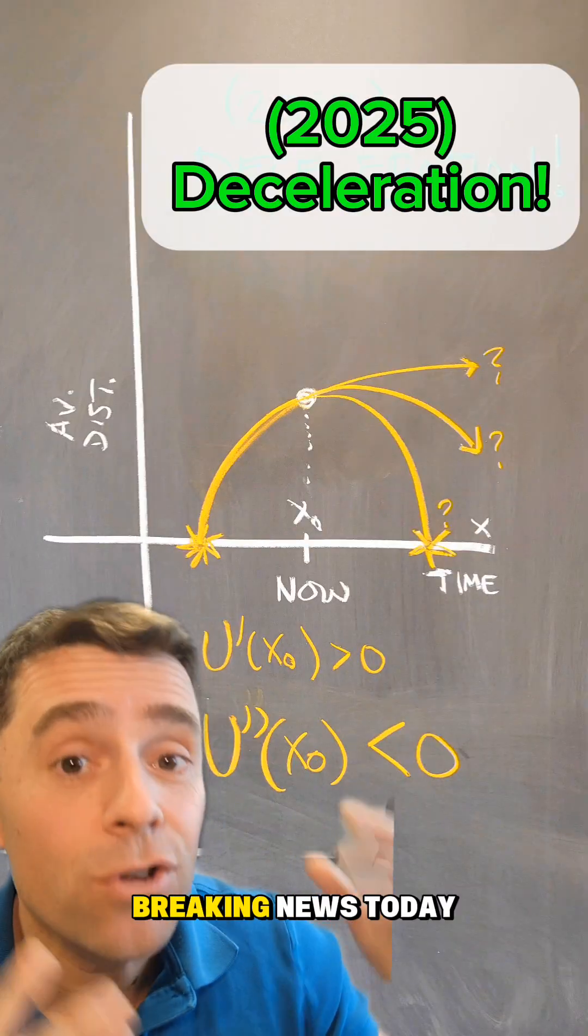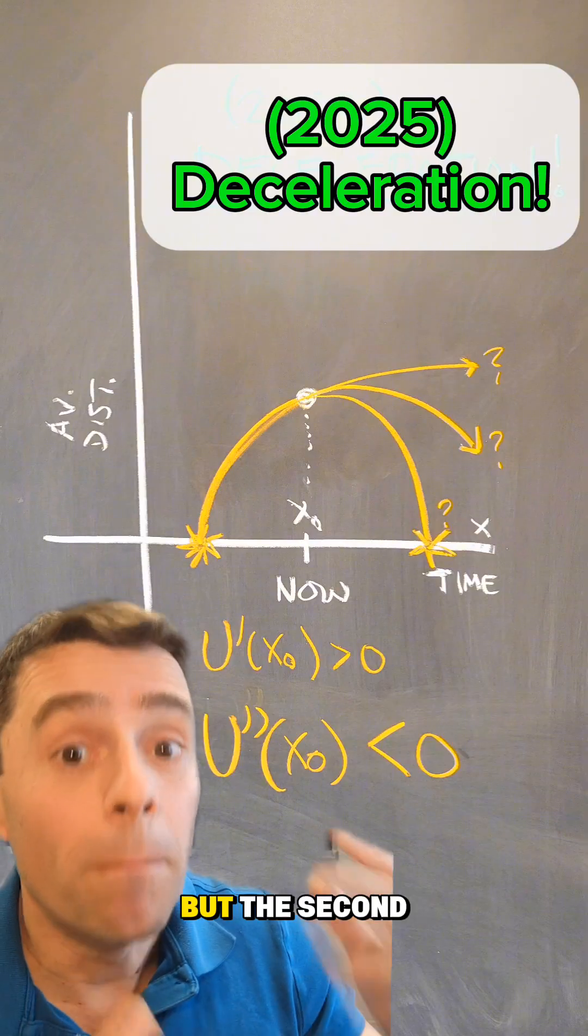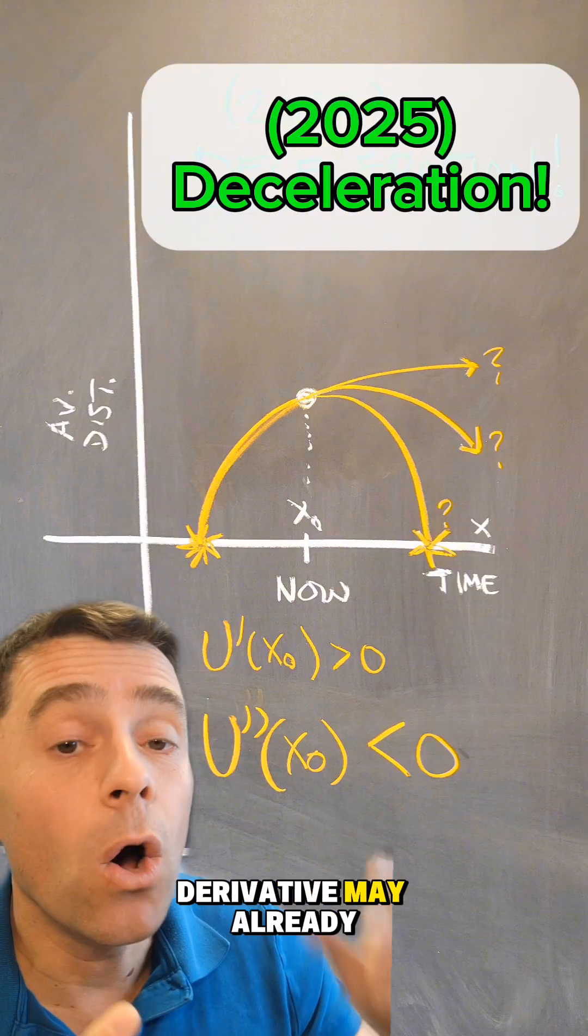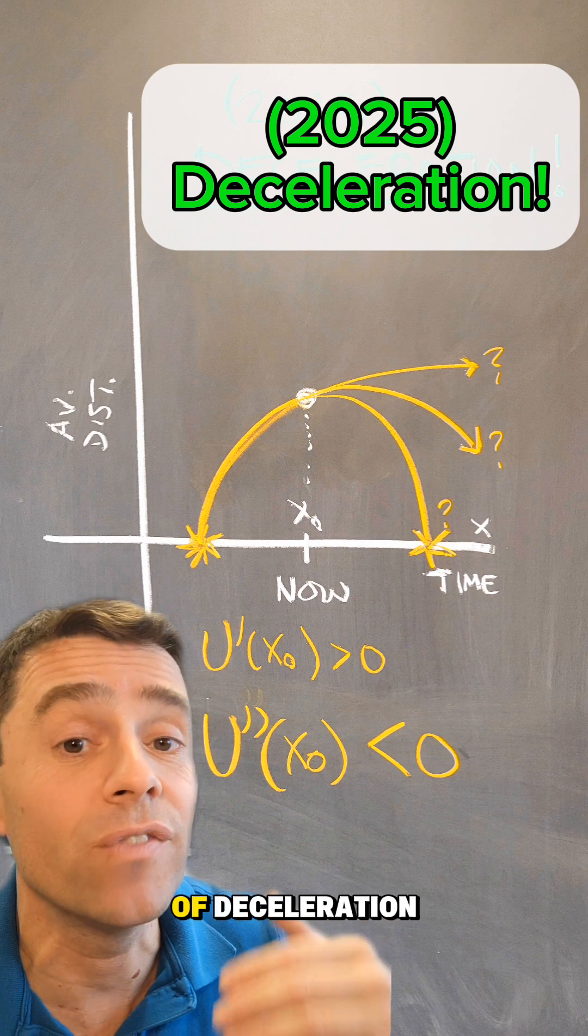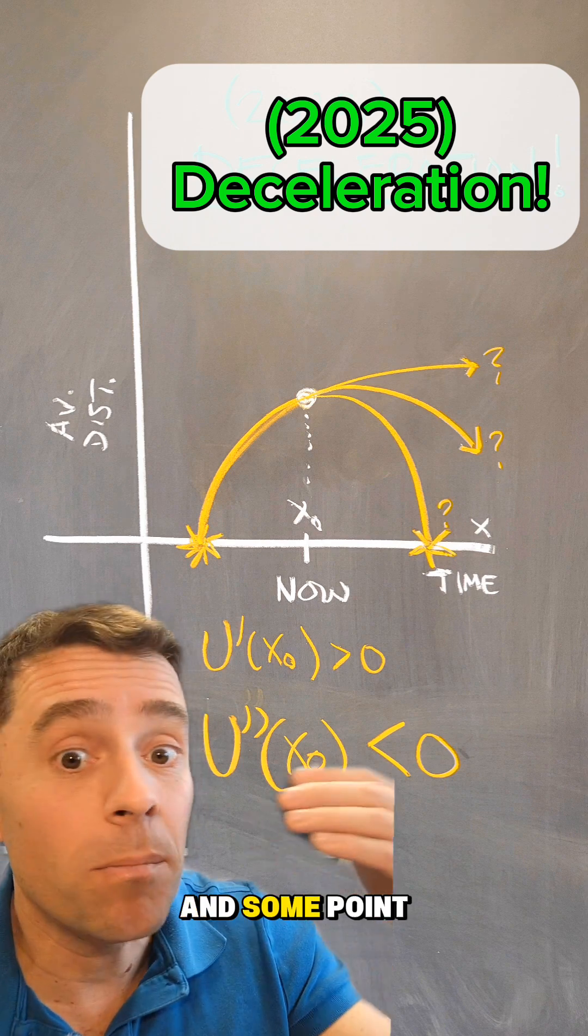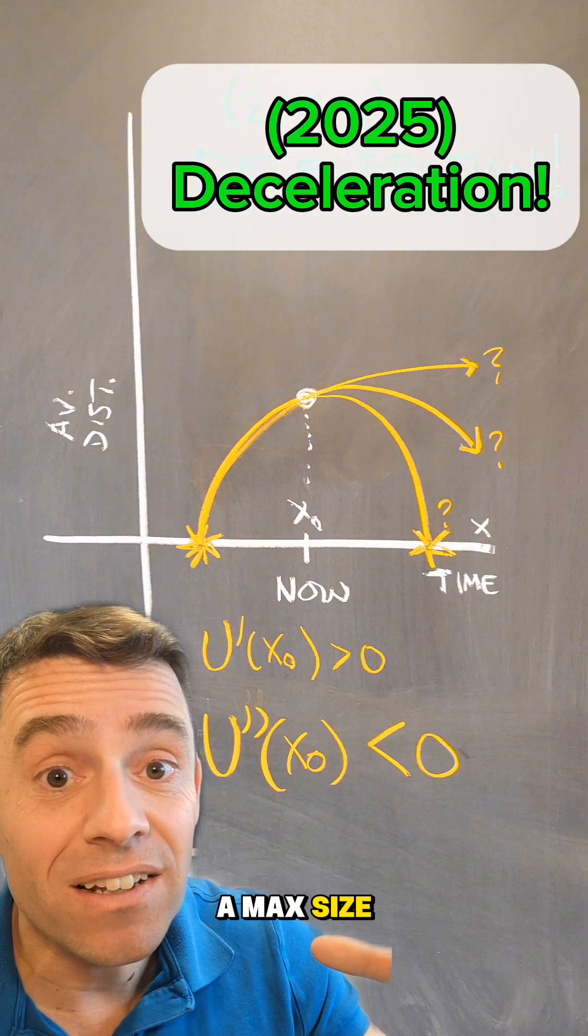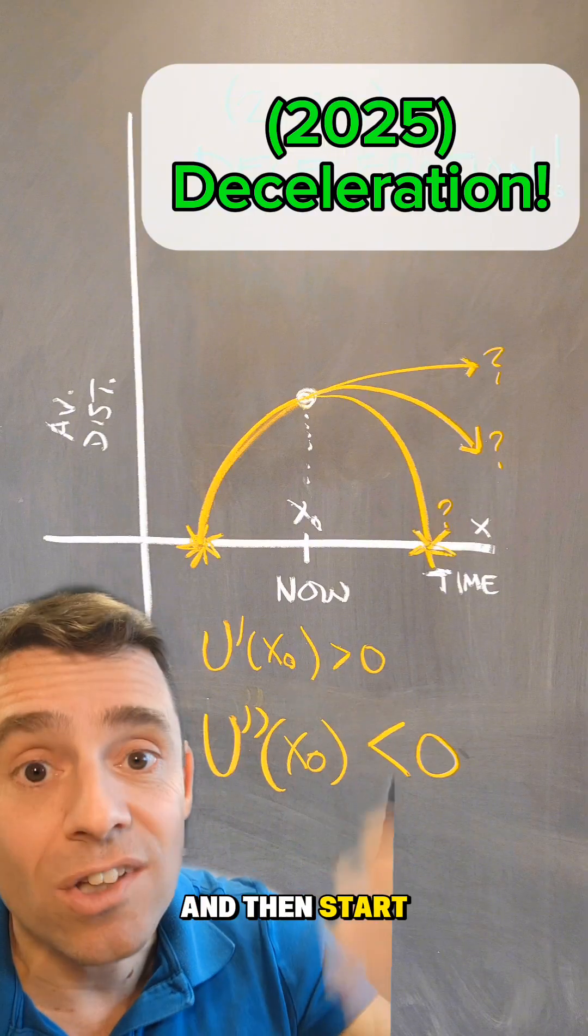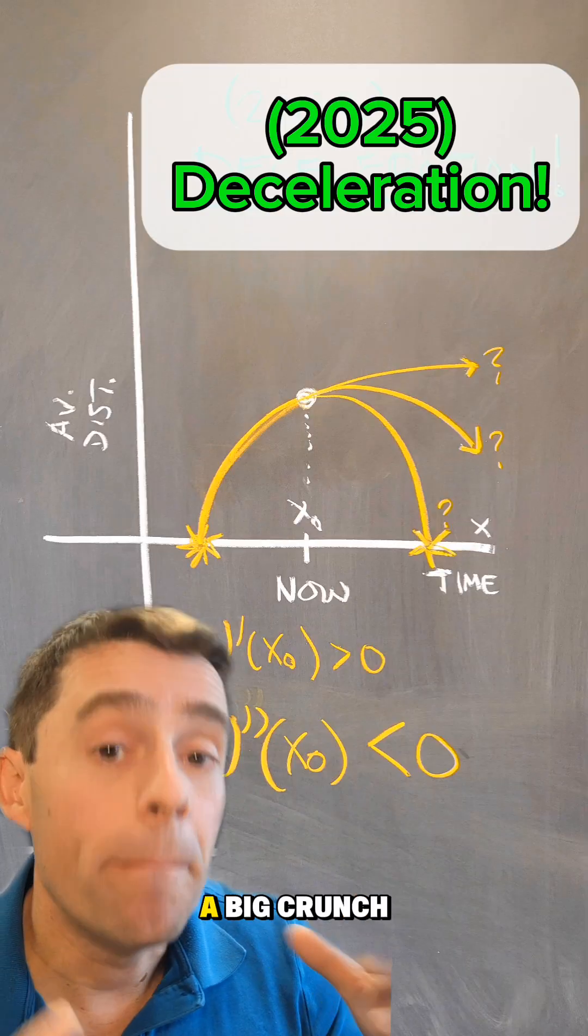And then the breaking news today is that yes, the universe is increasing in size, but the second derivative may already be negative, in which case we're already in this stage of deceleration. And at some point in the future, we could hit a max size of the universe, and then start decreasing in size, and possibly reach a big crunch.